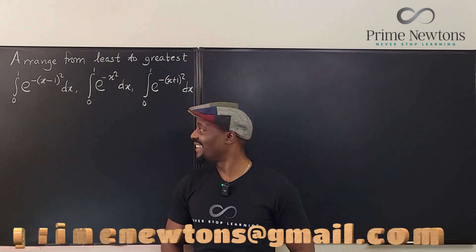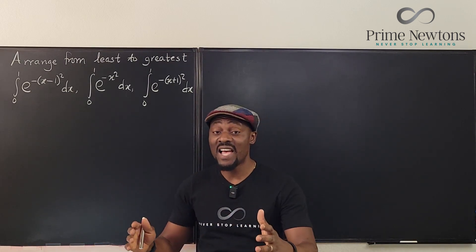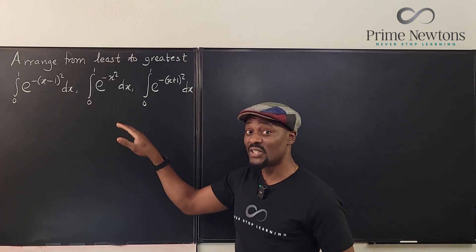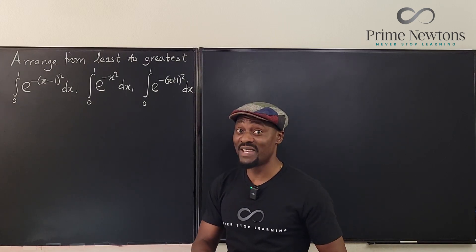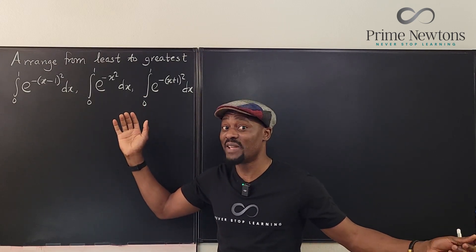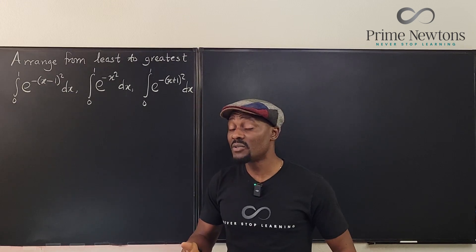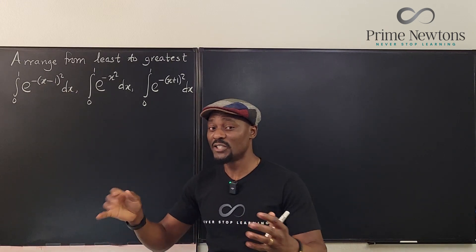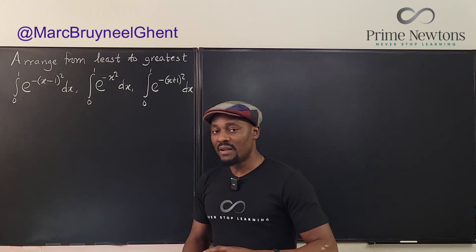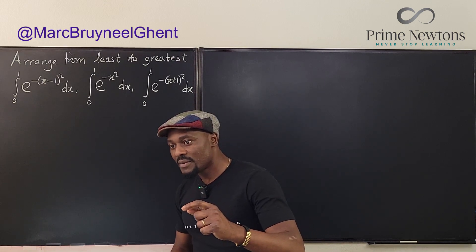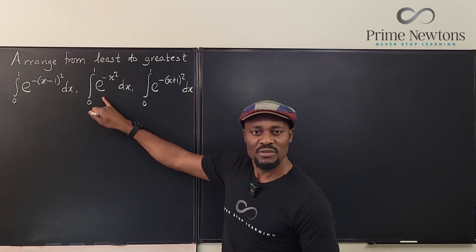Welcome to another video. This question is all the way from Belgium, and it says: arrange these definite integrals in order of magnitude, from the smallest to the greatest. The problem is we don't even know how to integrate any one of them, and this is supposed to be answered without integrating. So there has to be some special tools or special understanding. When I got the email and looked at the problem, it picked my interest because the middle one looked very familiar.